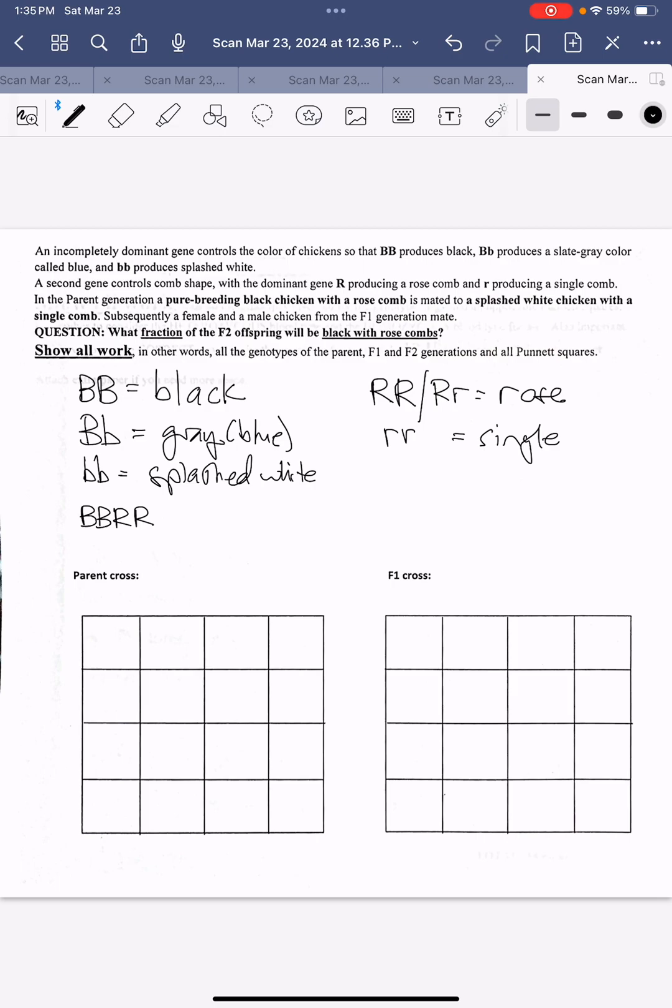That is what a pure breeder's genotype looks like. And if it's mating with a splashed white chicken, it has to be little b, little b with little r, little r. Remember, pure breeder.